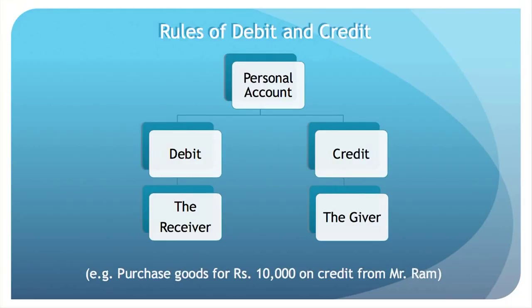First of all, for personal account, each account will have two aspects: debit and credit. If we are recording transactions in a personal account, the rule is that for debit, the receiver will be debited. For example, if Mr. X receives something, he is the receiver, so his account will be debited. If Mr. Y gives something, then he is the giver, so his account will be recorded on the credit side. The rule is: debit the receiver and credit the giver.